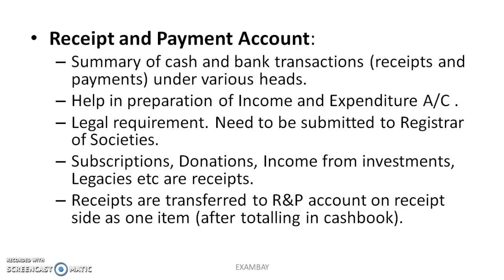Subscriptions, donations, income from investments, and legacies are the receipts - these are some examples of receipts. What are legacies? For example, a person who is a big industrialist has written in his will that all or 50% of his property he wants to donate to this NGO. The money that comes to the NGO through a will - from a dying person's will - we call that a legacy. It is a one-time payment. So anyone can donate their money to an NGO through their will - that is called a legacy.